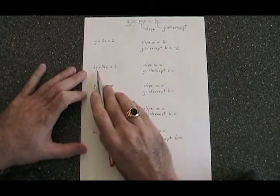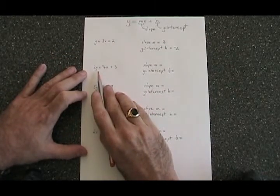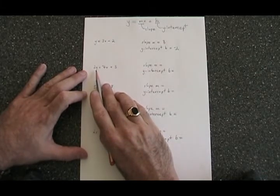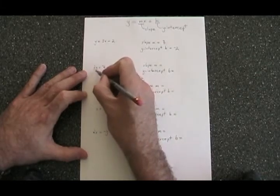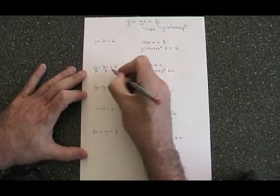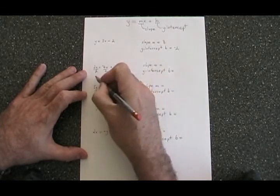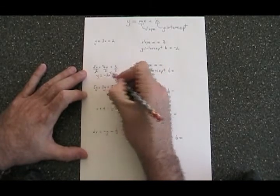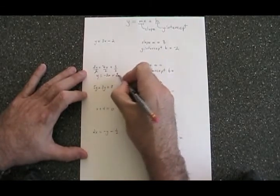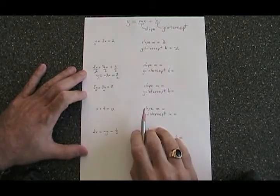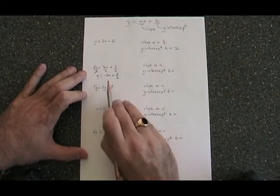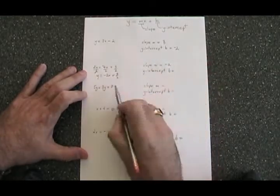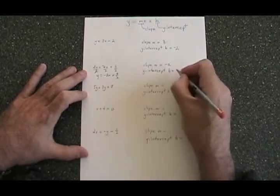In the second equation, y is not isolated yet. It has a 2 with it. If y is being multiplied by 2, we need to divide everything in the equation by 2. And this simplifies to y equals negative 2x plus 3 halves. Now we're in y equals mx plus b form, so m slope is equal to negative 2, and the b y-intercept is 3 halves.